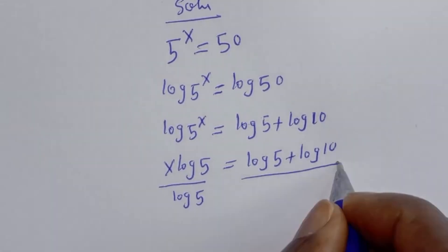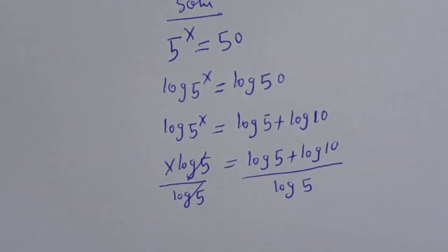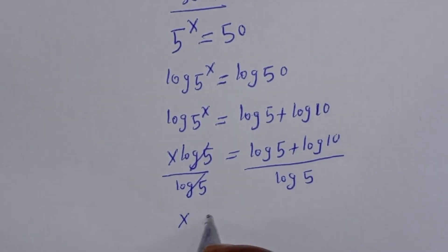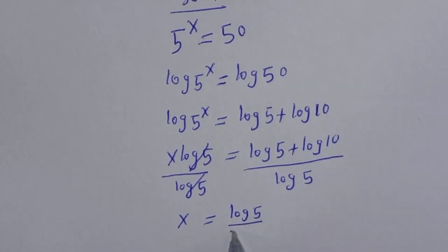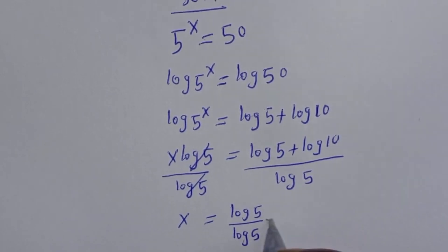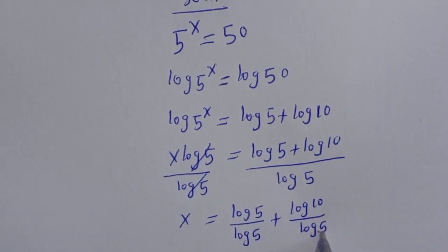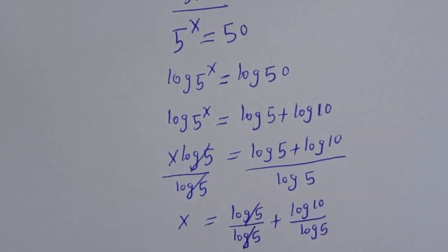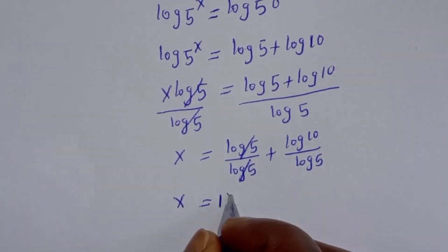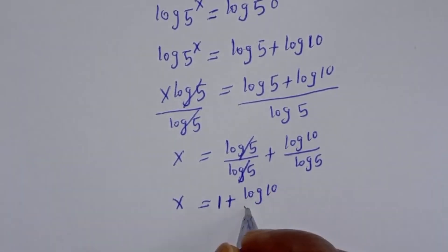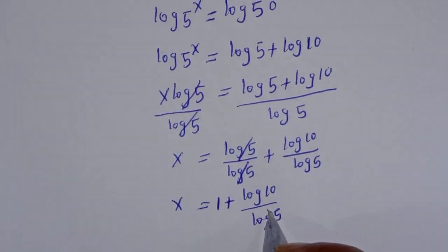Dividing both sides by log 5 — this cancels this. So s will be equal to log 5 over log 5 plus log 10 over log 5. This cancels, giving us 1. So s is equal to 1 plus log 10 over log 5. But here the log is in base 10.